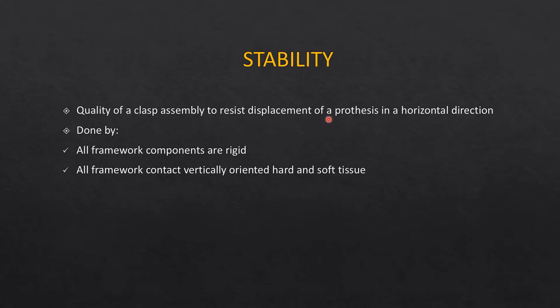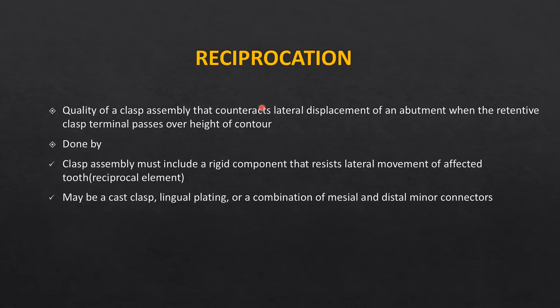Stability is the quality of the clasp assembly to resist displacement of the prosthesis in a horizontal direction. This is achieved by all the framework components — major connectors, minor connectors, saddle, denture base, reciprocal arm, and retentive arm — all of which should be sufficiently rigid. The framework should contact the vertically oriented hard and soft tissues, including the lateral walls of the residual alveolar ridges and axial walls of the teeth.